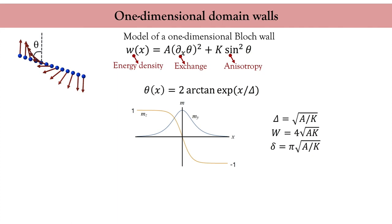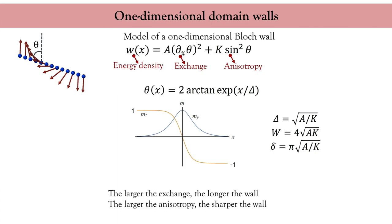Let's look at the parameters that determine the shape of the wall. The angle theta depends on only one parameter, delta, given by the square root of the ratio between the exchange and the anisotropy. The larger the exchange, the longer the domain wall, because the canting between neighboring magnetic moments must remain small to satisfy the magnetic exchange. In contrast, if the anisotropy is large, the domain wall tends to be much shorter, to minimize the length over which the magnetic moments point away from the anisotropy axis.